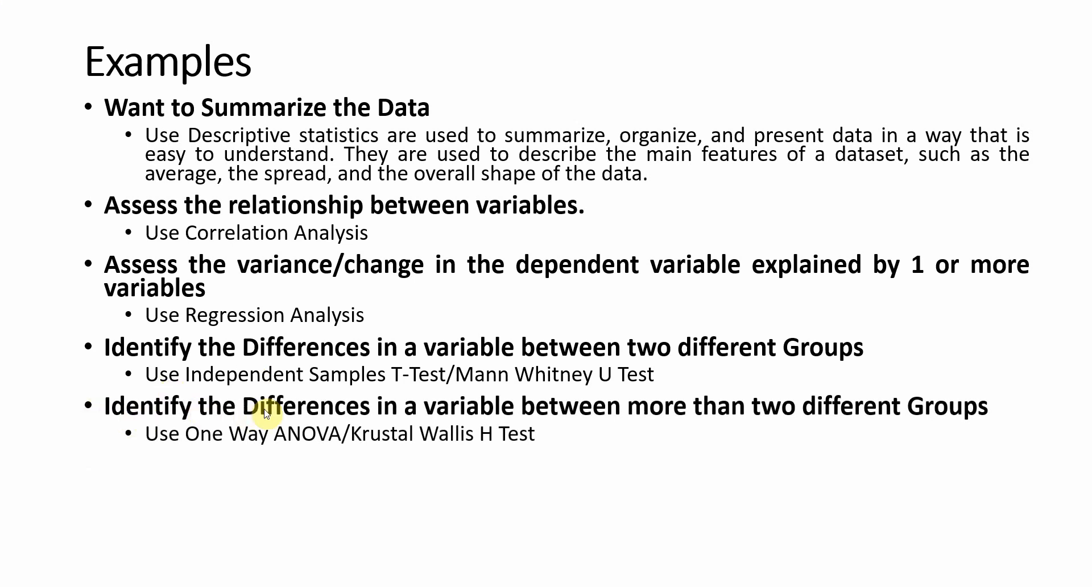For example, you want to identify the differences in a variable but in this case, you have got more than two groups. You are going to use ANOVA for normal distribution and Kruskal-Wallis for non-normal distribution.